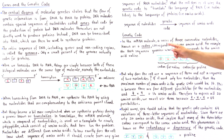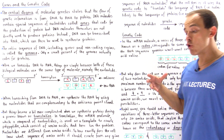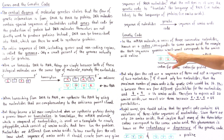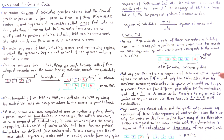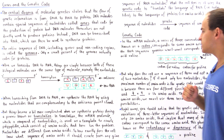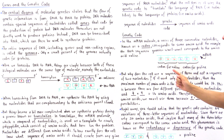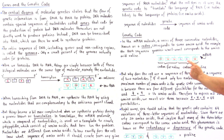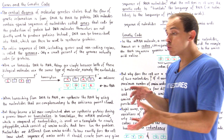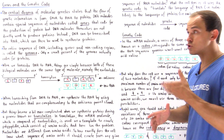In the mRNA molecule, a series of three consecutive nucleotides, known as a codon, corresponds to a specific amino acid. For example, the sequence guanine-uracil-uracil (GUU) corresponds to the amino acid valine. Looking at the diagram, the ribosomes take the mRNA and use the genetic code to translate the codons: GUU always corresponds to valine, while the sequence CCU always corresponds to proline. This is exactly how we synthesize or translate our proteins.